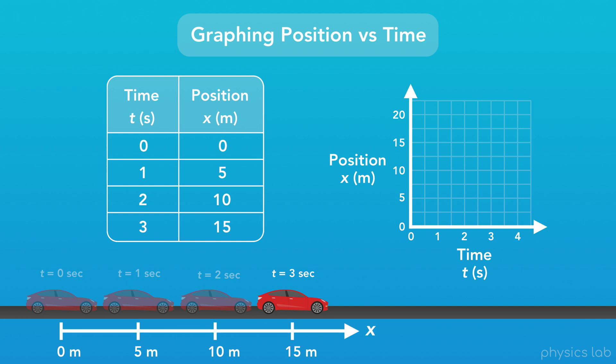Now it might seem weird that we're putting the car's horizontal position on the vertical axis of the graph, but the reason is we always put time on the horizontal axis. That will make more sense throughout the course, but for now, just know that we always put time on the horizontal axis of a graph.